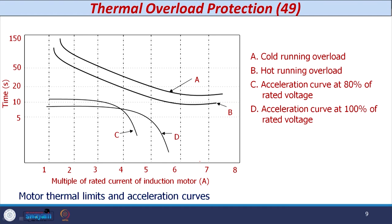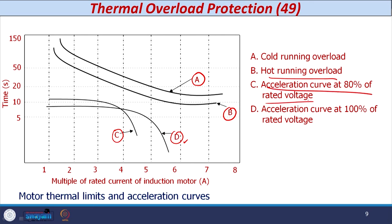Looking at the curve, curve A is provided for when you start the motor during cold condition and it is in running condition with overload. Just below curve A, there is another curve for running the motor in overload condition when it is in hot condition. The other two curves — curve C and curve D — are the acceleration curves: C is at 80 percent of the stator voltage and D is at 100 percent of the rated voltage. When considering relay settings, you need to consider the acceleration curve with 80 percent of the rated voltage.